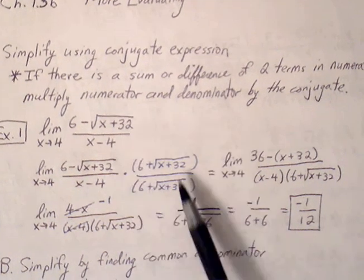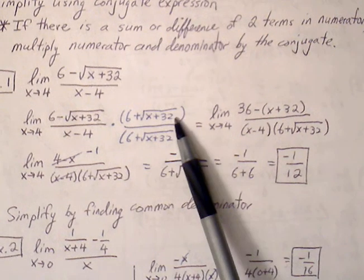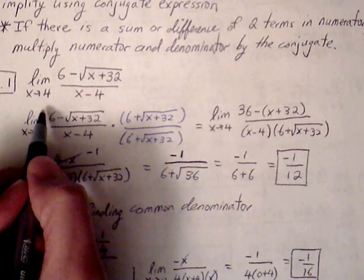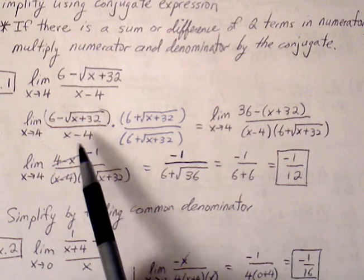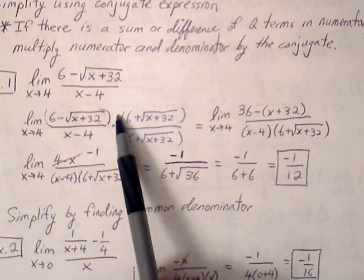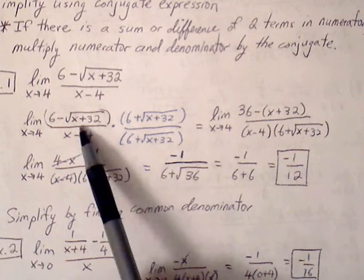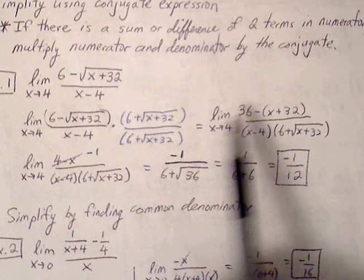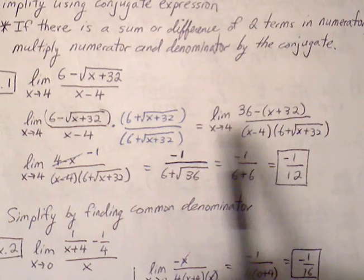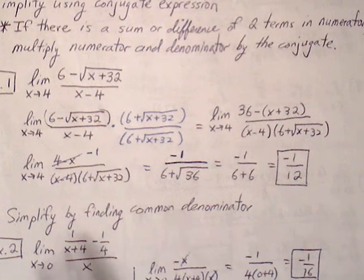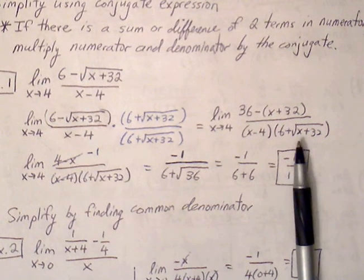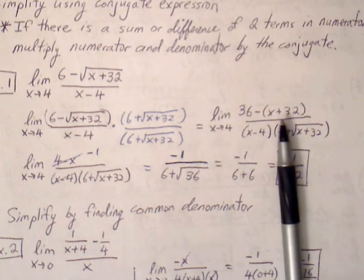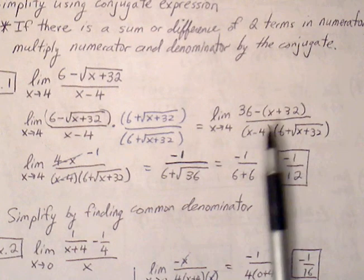The conjugate of 6 minus root of (x plus 32) is simply 6 plus square root of (x plus 32). Once we identify the conjugate, we multiply by that same term in numerator and denominator, then distribute and expand. This gives us 36 minus (x plus 32) — a difference of squares — in the numerator. The denominator becomes (x minus 4) times (6 plus root of (x plus 32)). Simplifying the numerator: 36 minus x minus 32 gives us 4 minus x.